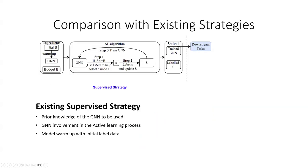The existing work mainly focuses on supervised strategies. There are three drawbacks behind these strategies. First, it implies prior knowledge of the GNN to be used later, which is impractical in some cases. Second, they involve GNN during the active learning process, which is costly. They also require some initial labeled data to warm up the model before the active learning process, which is infeasible in some scenarios.